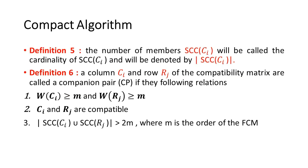Definition 5: The number of members SCC(C_i) will be called the cardinality of SCC(C_i) and will be denoted by |SCC(C_i)|. Definition 6: A column C_i and row R_j of the compatibility matrix are called a companion pair (CP) if they follow the following relations: